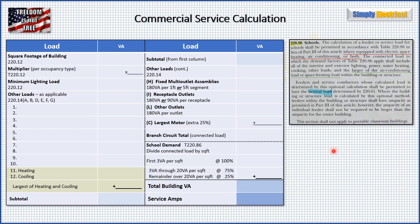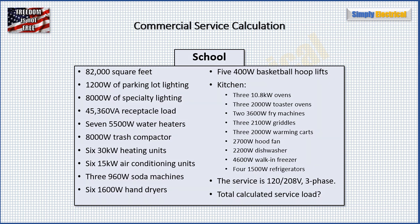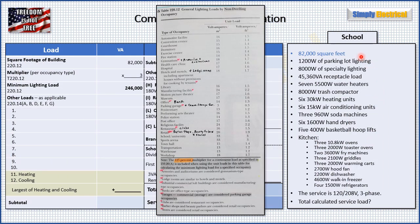Now we're going to take an example and plug our data into this table step by step. We have an 82,000 square foot school with various loads — pretty typical for schools, including a kitchen with cooking equipment. The service is 208-volt, three-phase. We have our example with all the data on the right, and our table on the left. We're going to start with our square footage.